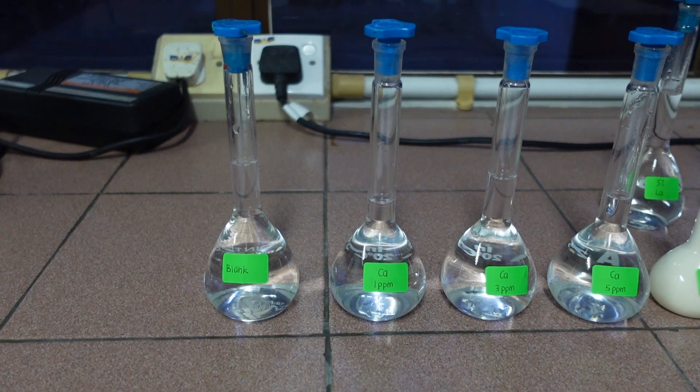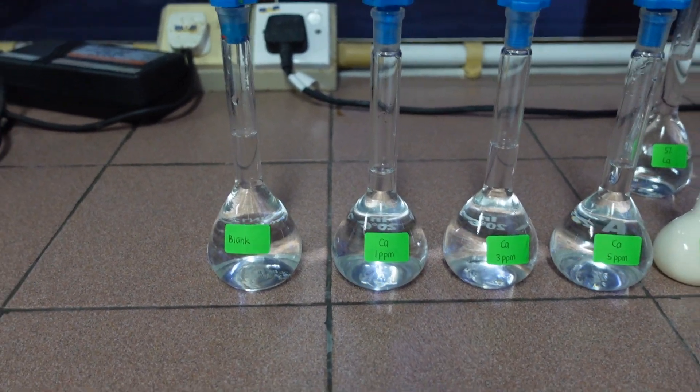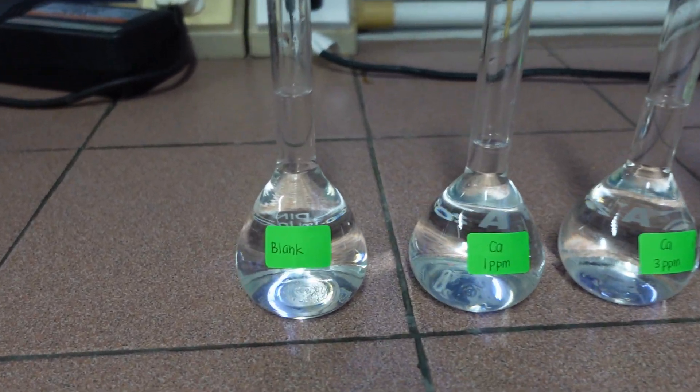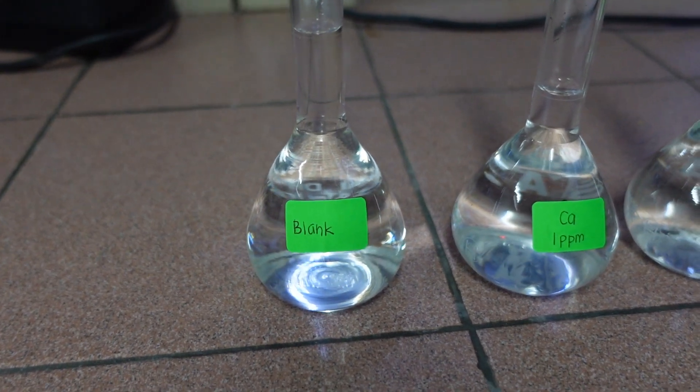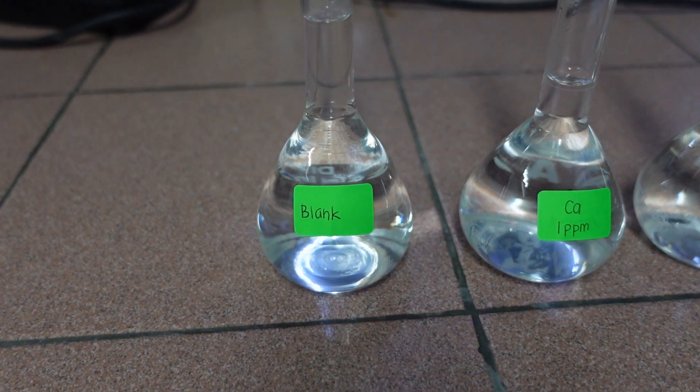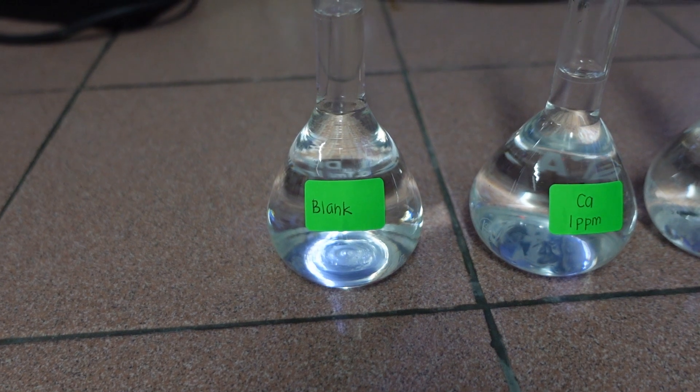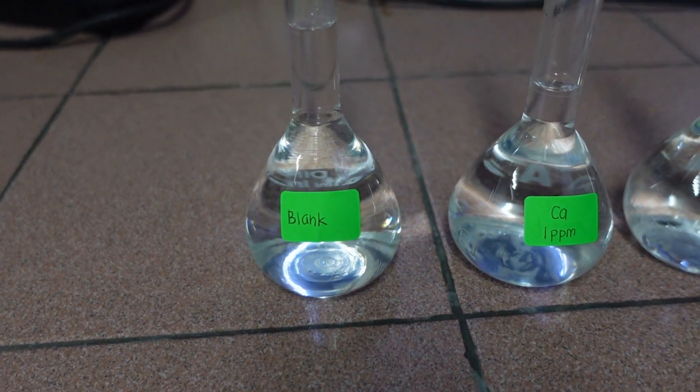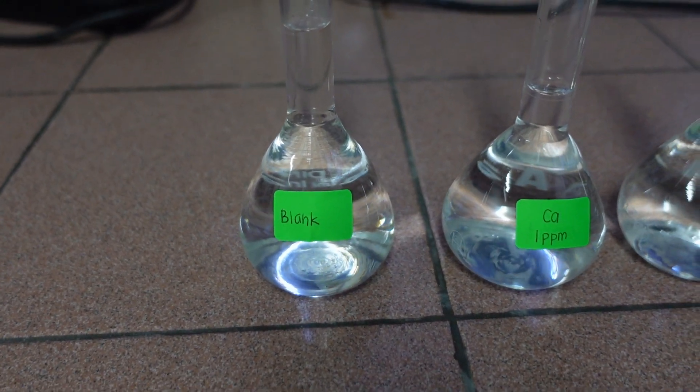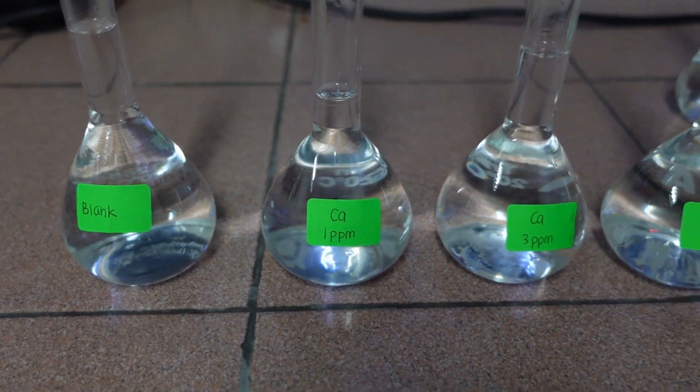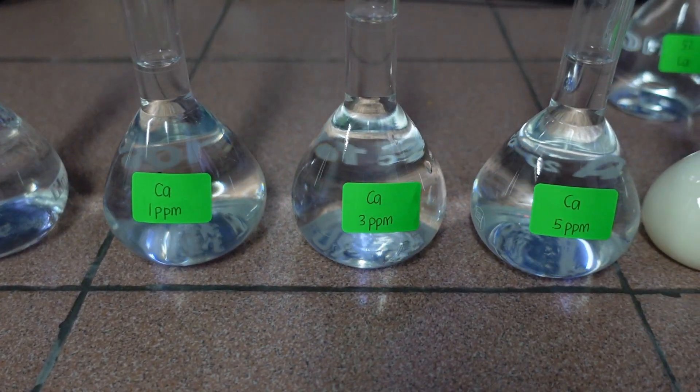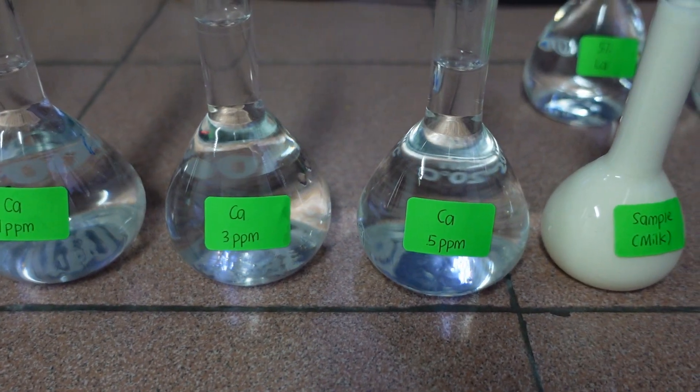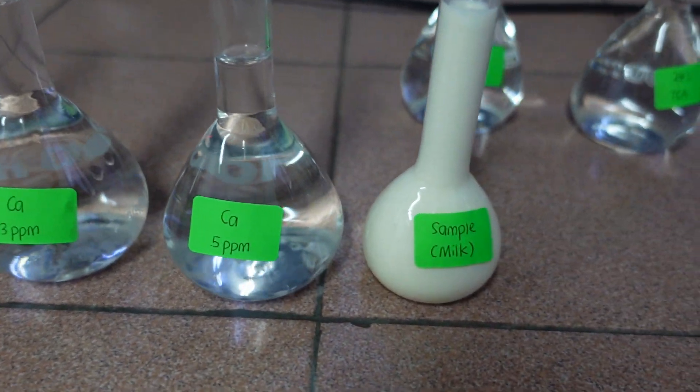As you can see here, these are the standards prepared. We have a blank. Like any analysis, we need to prepare a blank first. Blank is basically the solvent we use in our standard as well as in our sample. This is calcium at 1 ppm, calcium at 3 ppm, and calcium at 5 ppm.